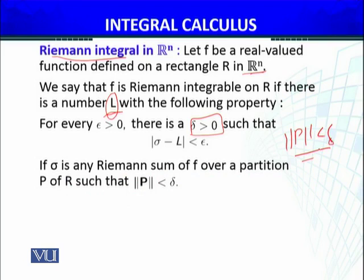Whenever sigma is any Riemann sum over a partitioning P such that the norm of the partitioning is less than delta. What is happening? We choose any epsilon greater than zero, we must be able to find a delta such that the distance between the Riemann sum and the finite number L could be as small as possible, less than epsilon.